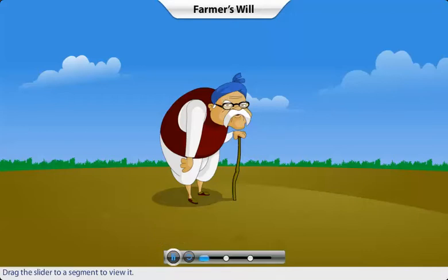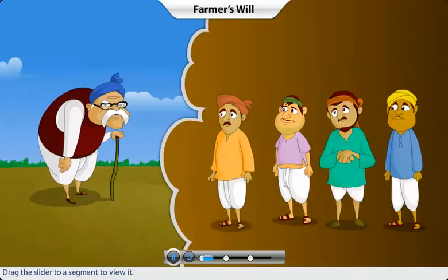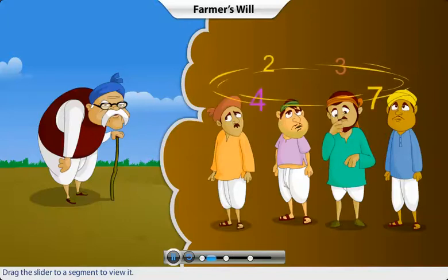Shambhu was an old farmer who owned a piece of land measuring four hectares. He knew that his four sons hated mathematics, and he wanted them to realize the importance of learning mathematics. So he made his will accordingly.